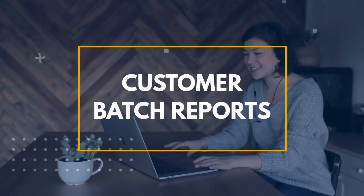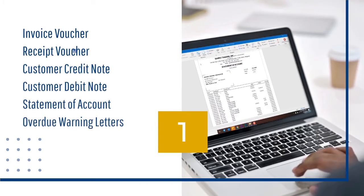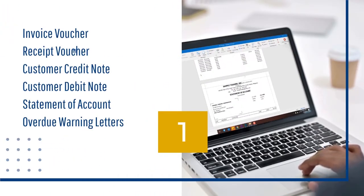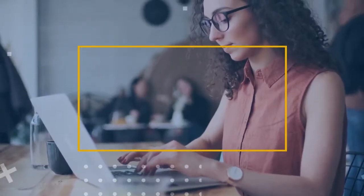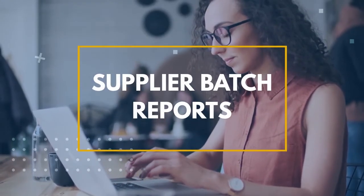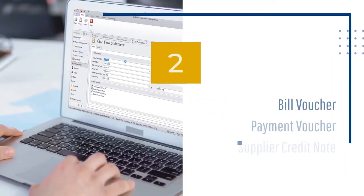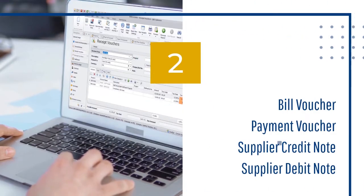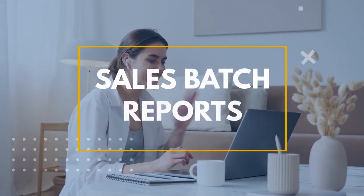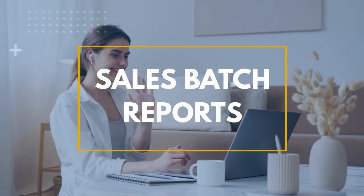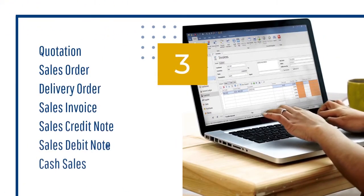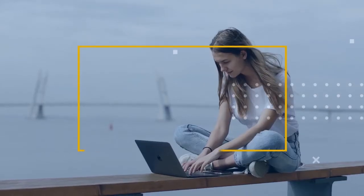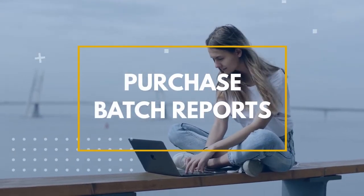The batch reports are organized into four categories: Customer Batch Reports, Supplier Batch Reports, Sales Batch Reports, and Purchase Batch Reports.